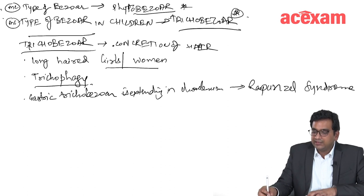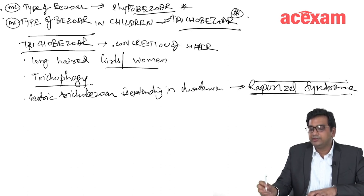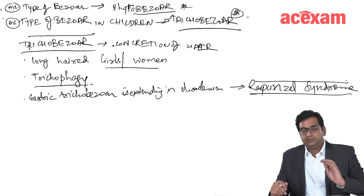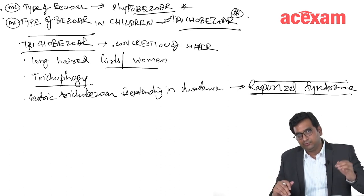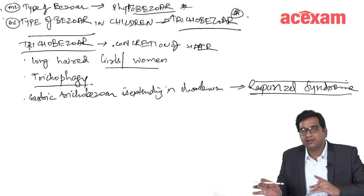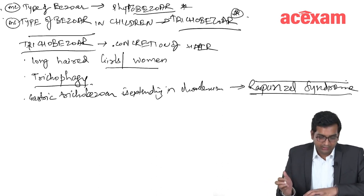The question generally that they will ask regarding Rapunzel syndrome is Rapunzel syndrome is a type of trichobezoar. They will give you all the options phytobezoar, pharmacobezoar, lactobezoar. The correct answer is trichobezoar.